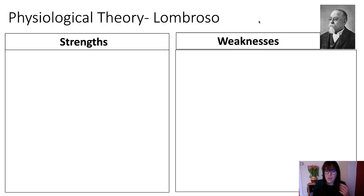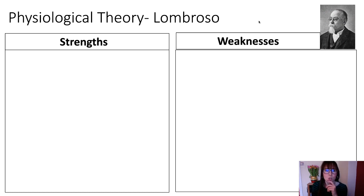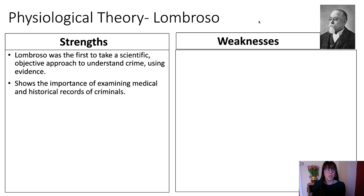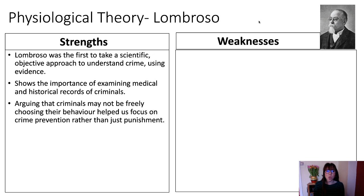Strengths of Lombroso: he was the first to take a scientific, objective approach to understanding crime using evidence — pioneering work. He showed the importance of examining medical and historical records. He also argued criminals may not be freely choosing their behaviour, which helped shift focus from crime punishment toward crime prevention.